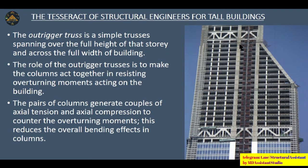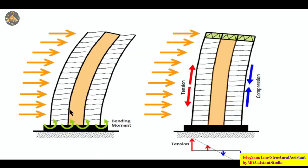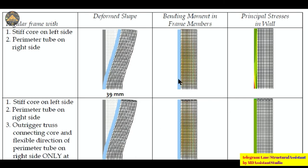The outrigger truss is the most widely used structural arrangement to control deflection in very high-rise buildings. It makes the columns act together in resisting the overturning moment acting on the building and significantly reduces deflections. In a case study comparing a regular frame, a stiff core with perimeter tube, and an outrigger truss, the deflection reduces by only 1 mm with just the perimeter tube, but the force distribution becomes more uniform after adding outrigger trusses.